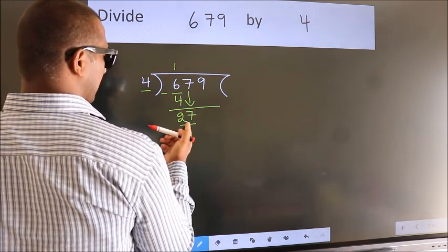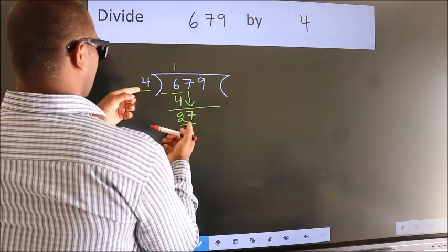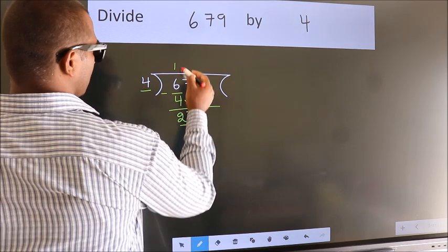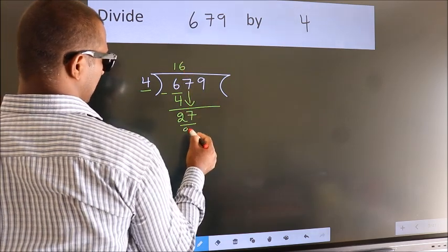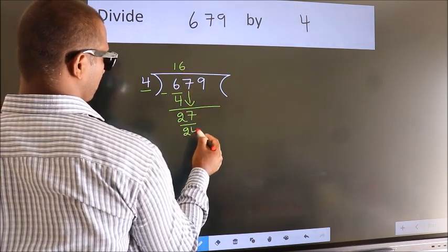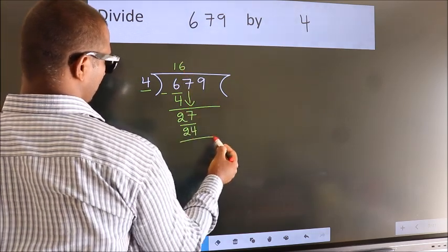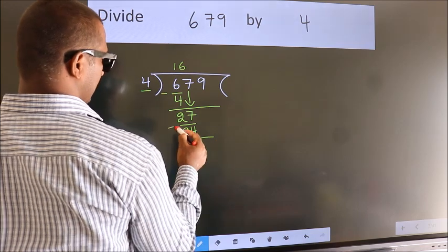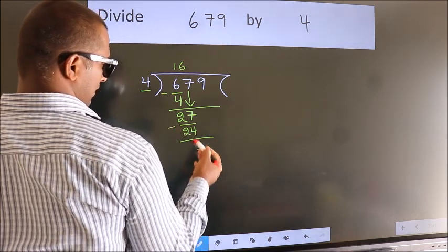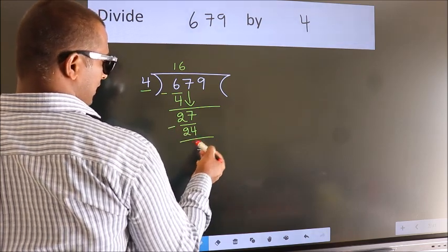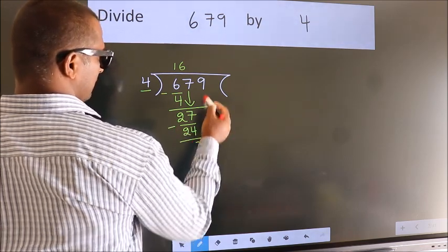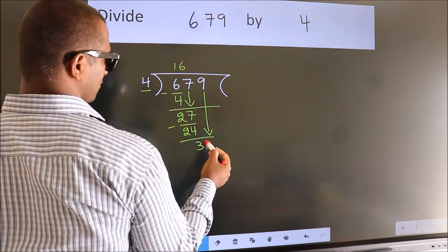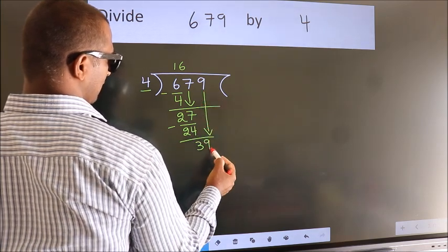A number close to 27 in the 4 times table is 4 sixes, which is 24. Now we subtract — we get 3. After this, bring down the beside number. So 9 comes down.